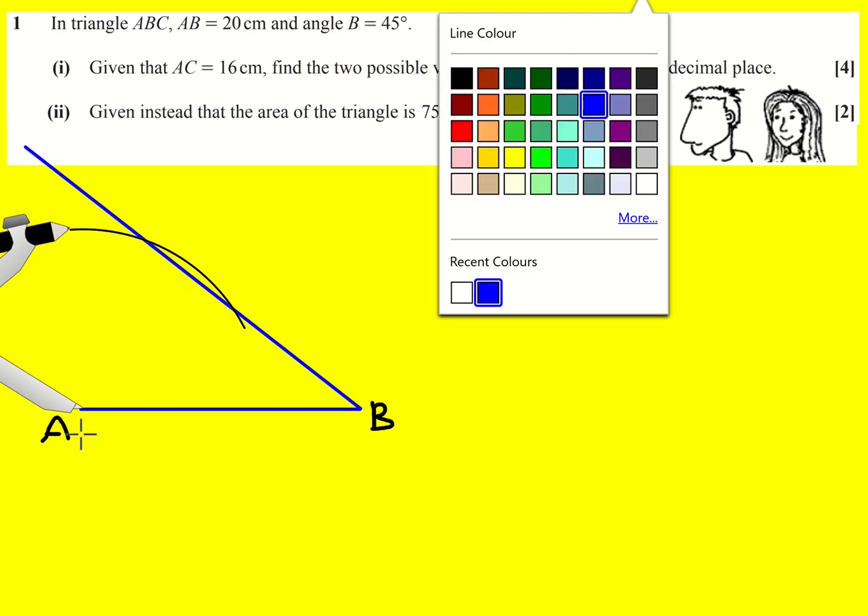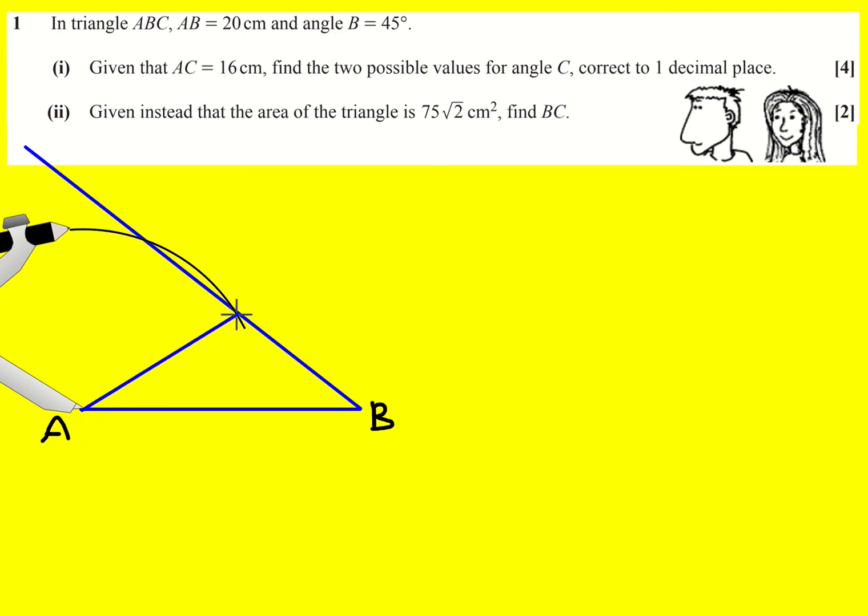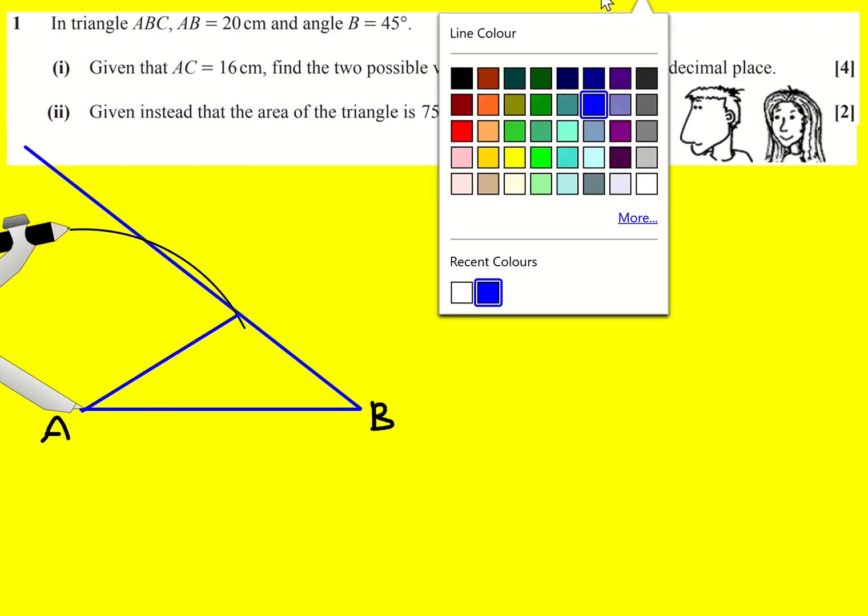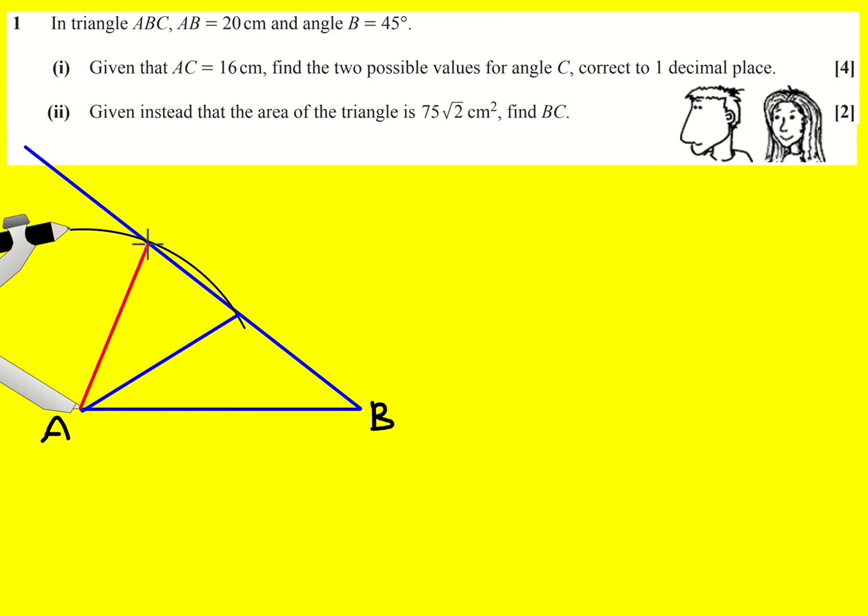So the first one will be here and then I'll get a second triangle here. So in both cases I get AC equal to 16 but I've got two separate triangles as you can see.